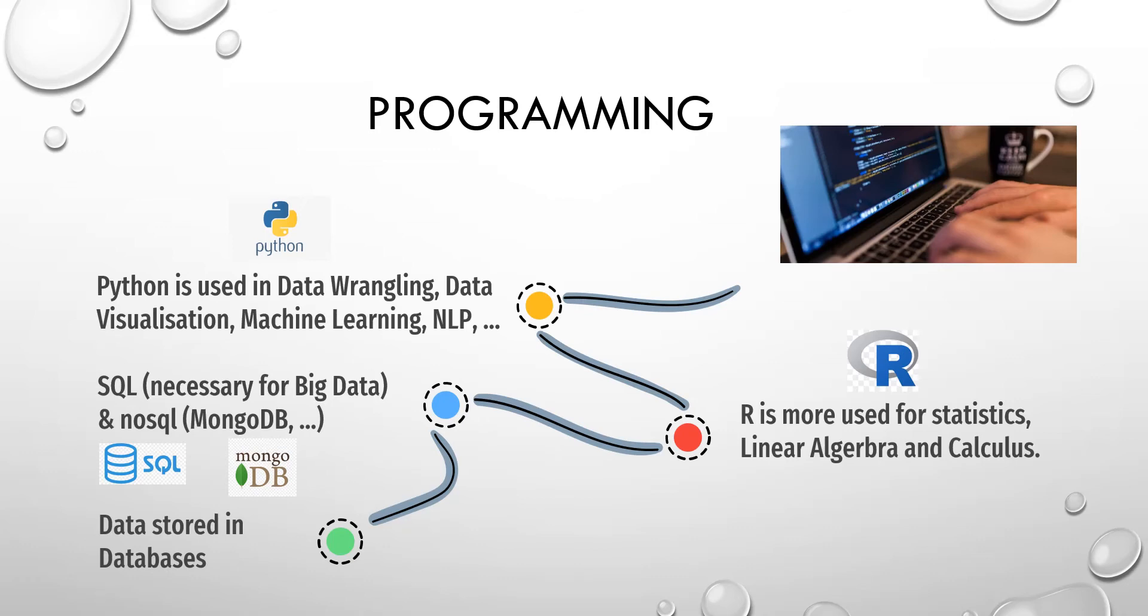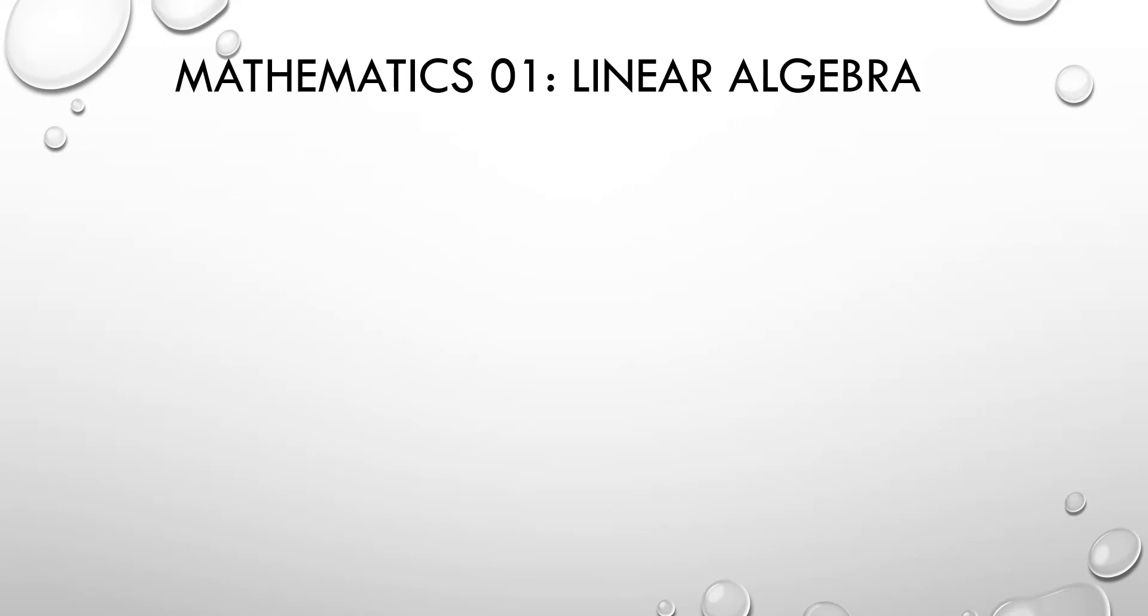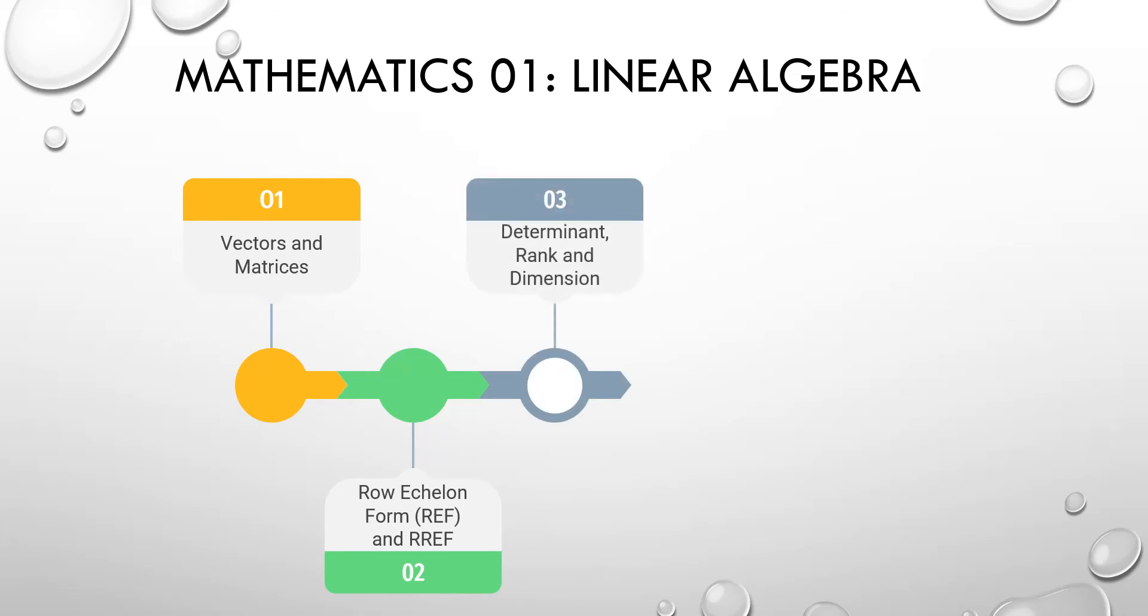For mathematics for data science, it can be classified into two categories. The first category is linear algebra. In linear algebra we have to know about vectors and matrices, row echelon form and reduced row echelon form. This can help you to decide whether a system has a solution, a finite set of solutions, or no solutions at all. The third point is we have to learn what is a determinant, a rank, and we also have to work with dimensions.